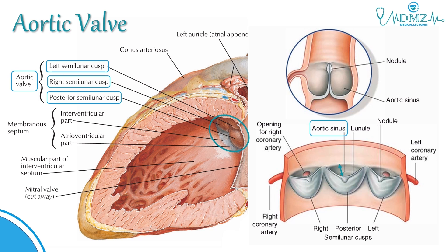The three right, left, and posterior cusps correspond to three right, left, and posterior aortic sinuses. The right coronary artery originates from the right aortic sinus, and the left coronary artery originates from the left aortic sinus. Because of this, the posterior aortic sinus and cusp are sometimes referred to as the non-coronary sinus and cusp.